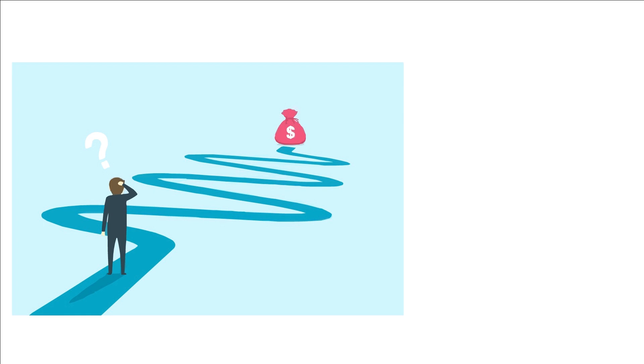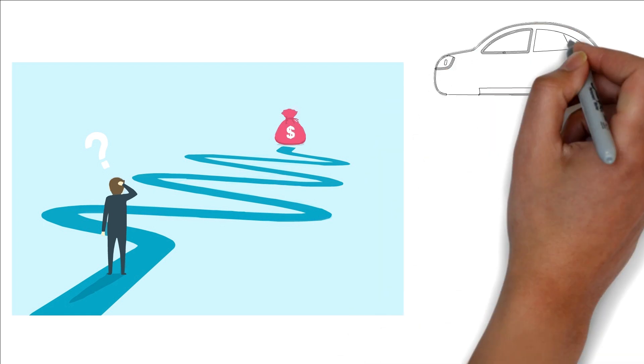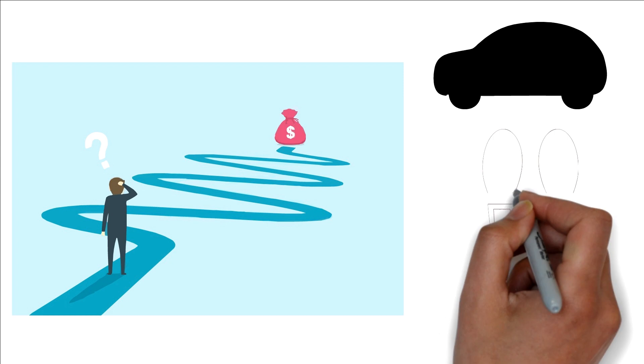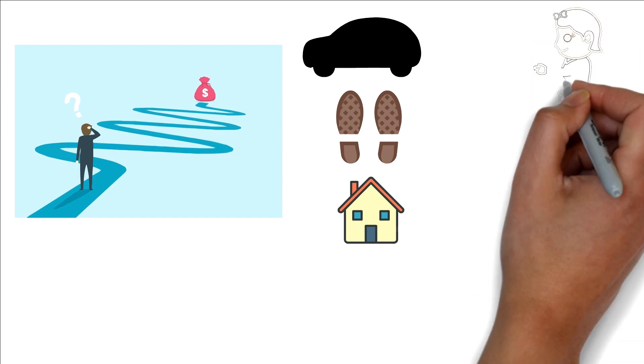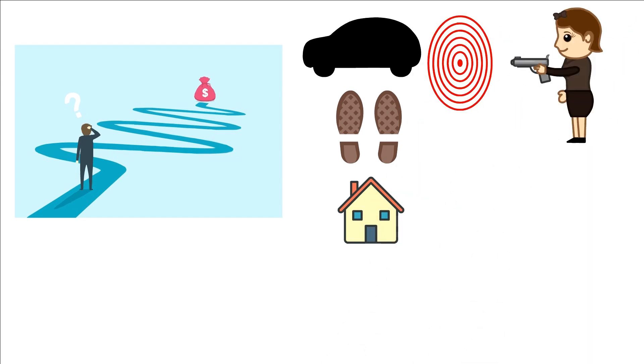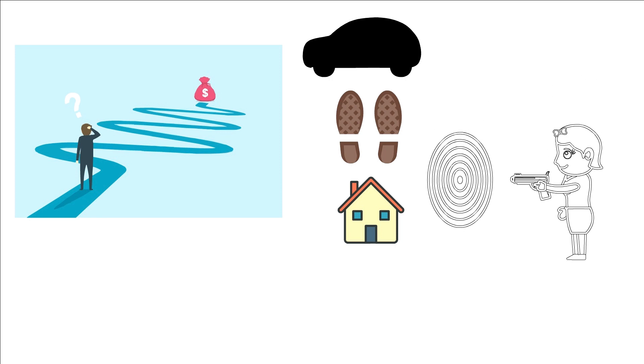Often, society's measuring stick revolves around material symbols – the car one drives, the brand of one's shoes, or the zip code of one's home. But it's vital to understand that society's yardstick is a constantly moving target, swayed by trends and popular opinion.